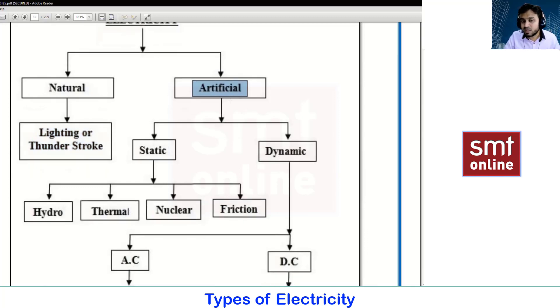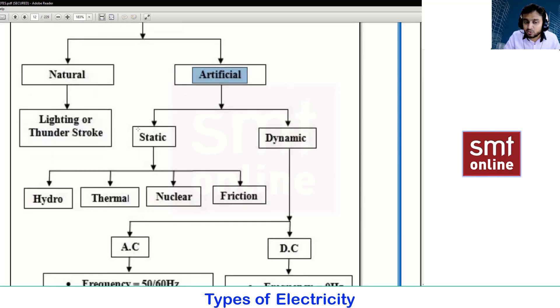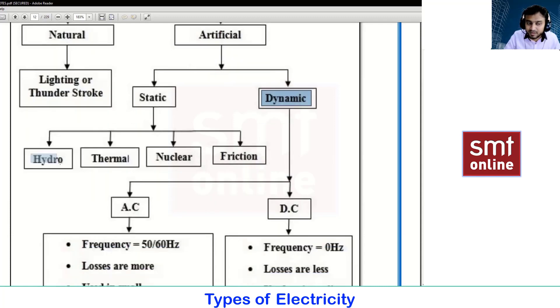This artificial energy we are getting in two forms - static and dynamic. The energy which we are generating can be from hydro plant using water as a medium, thermal by using high grade coal, nuclear by using chemicals like thorium and plutonium, or frictional. We have hundreds of generating plants and research papers.